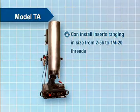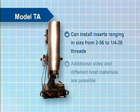The model TA machine can be tooled to install inserts ranging in size from 256 to quarter 20 threads. Additional sizes and different host materials are possible subject to engineering approval.